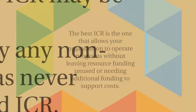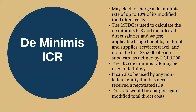Now let's talk about the two types of ICRs. First, what is the de minimis ICR? An award recipient that proposes to use federal grant funds to pay for indirect costs may elect to charge a de minimis rate of up to 10% of its modified total direct costs (MTDC). The MTDC includes all direct salaries and wages, applicable fringe benefits, materials and supplies, services, travel, and up to the first $25,000 of each sub-award, as defined by 2 CFR 200. The 10% de minimis ICR may be used indefinitely and can be used by any non-federal entity that has never received a negotiated ICR, charged against modified total direct costs.